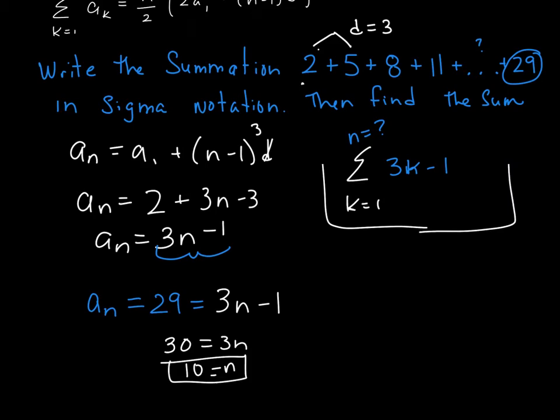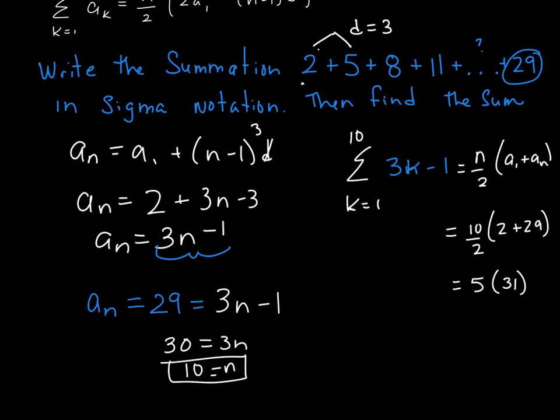So now this is my summation formula. The next step with this is find the sum of that sequence. So using the formula again, the sum of any arithmetic sequence is n over 2 times a1 plus an, which in this case is 10 over 2 times 2 plus 29, which gives us 5 times 31 or 155.